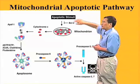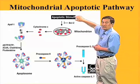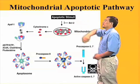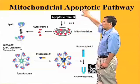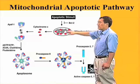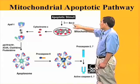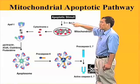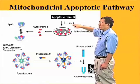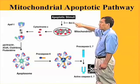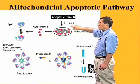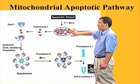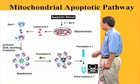We know that apoptotic stimuli, such as radiation by UV light, will exert their effects on mitochondria. The signal is interpreted by the BCL2 family proteins. The BCL2 family proteins regulate the apoptotic response by mitochondria.